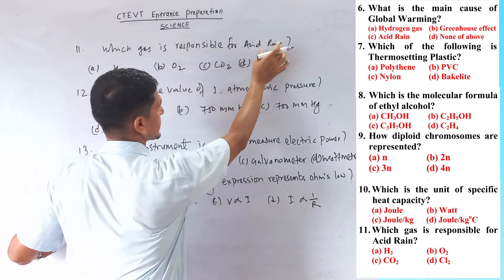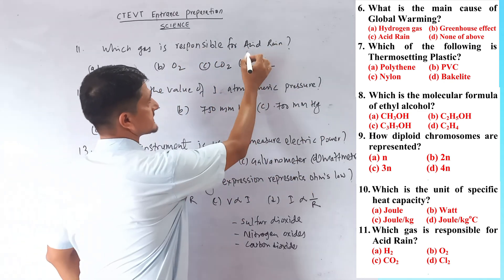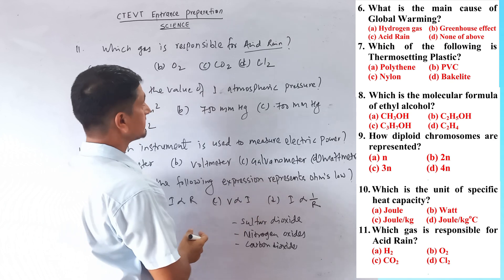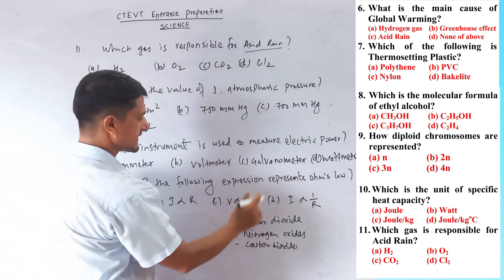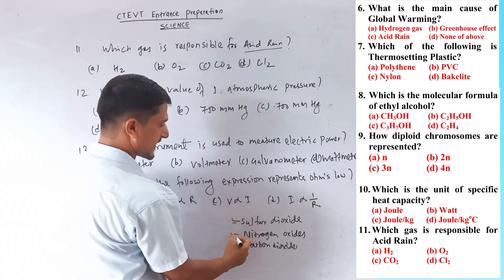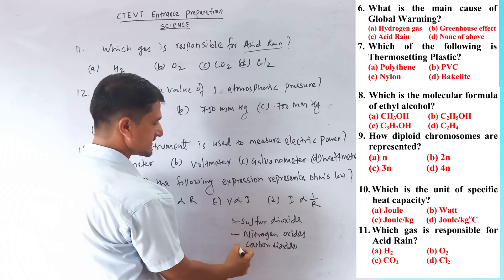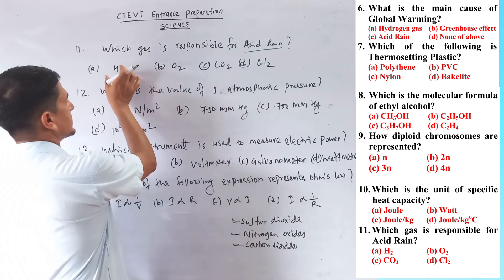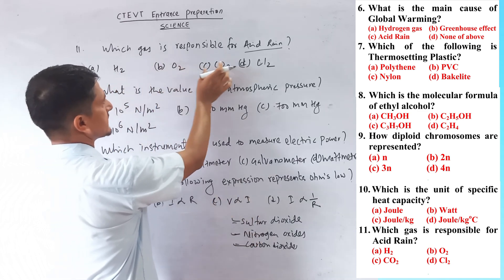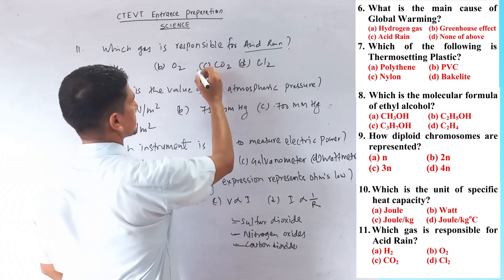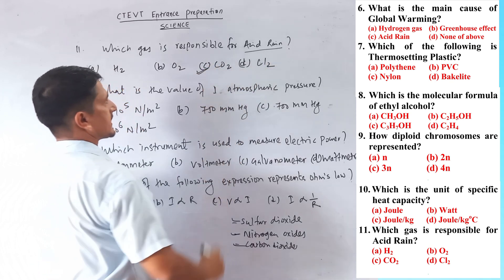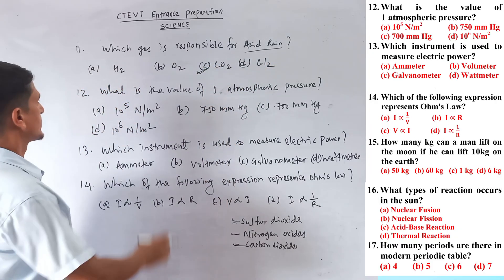Question number eleven: which gas is responsible for acid rain? The main gases responsible for acid rain are sulfur dioxide and nitrogen oxide. Among the given options — hydrogen, oxygen, carbon dioxide, and chlorine — the answer indicated is carbon dioxide.